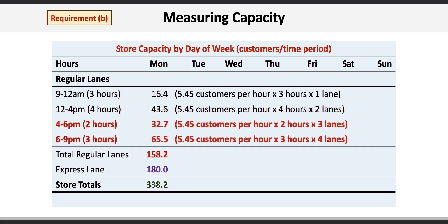For the 4 to 6 p.m. and 6 to 9 p.m. time slots, we can serve up to 32.7 customers between 4 and 6 and 65.5 customers between 6 and 9 — 2 and 3-hour slots with 3 and 4 regular lanes open respectively. That's a total of 158.2 customers through the regular lane on Monday. Adding the 180 express lane customers gives a capacity of 338.2 customers on Monday.